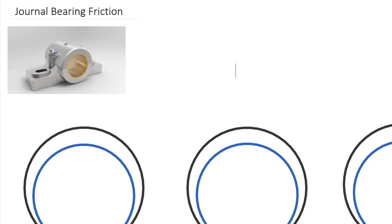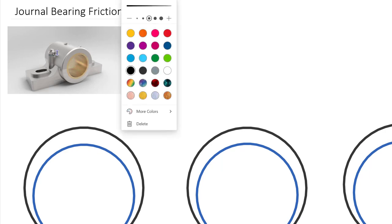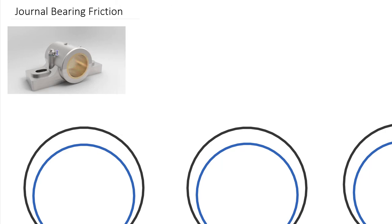One thing we didn't consider back in 3D equilibrium was the friction from one of these bearings. All of the friction we're dealing with here in the friction chapter of statics is dry friction. This may be the case where it makes the least sense to have dry friction, but we'll start there — and as you get into fluids and other classes you can start dealing with fluid friction. Just a reminder: journal bearing friction here is going to be dry friction at one contact point.